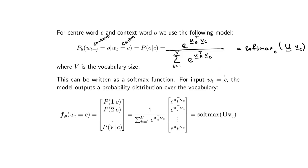That output vector indicates the probability that each word in the vocabulary occurs as a context word for this center word. We can write this out as a model that takes in the center word and outputs the probability for the first word in the vocabulary occurring as a context word, the second word, and so on up to the very last word in the vocabulary.